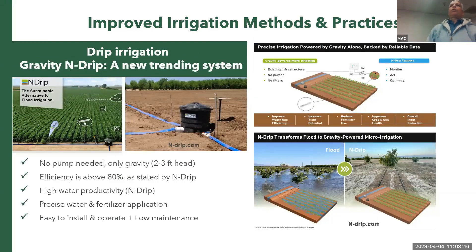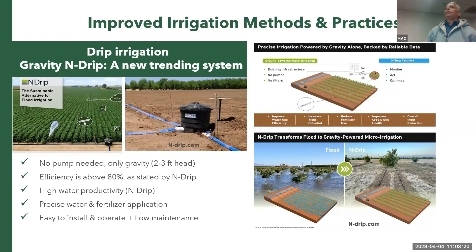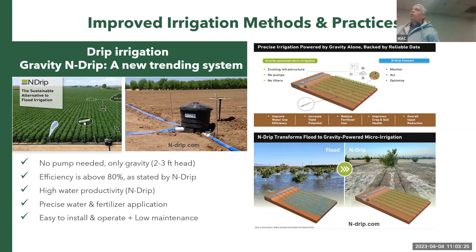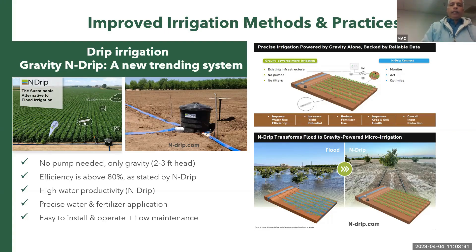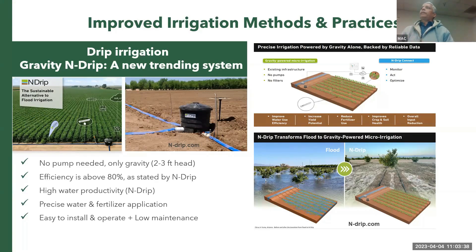End drip, or gravity drip, does not require pumping. All you need is two to three feet of head — a ditch or pond is sufficient to feed the entire field under low pressure. The company claims it has high water productivity and is easy to install and maintain.